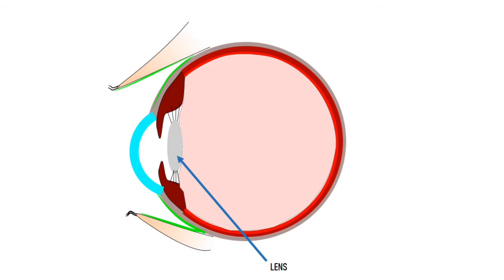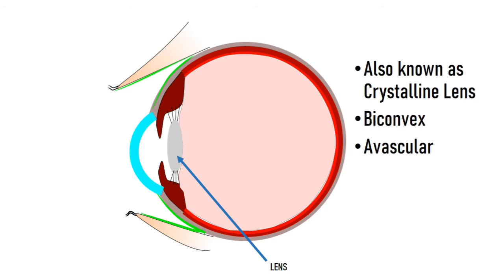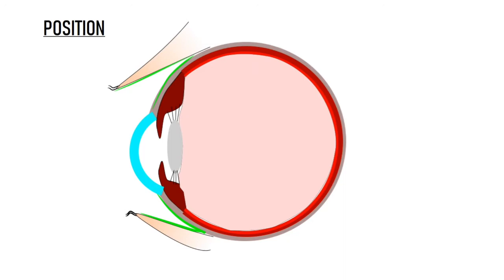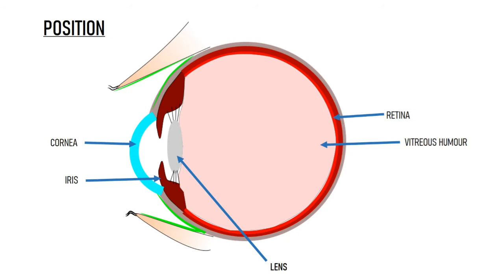The lens is a biconvex structure. It is avascular and transparent. The lens is positioned in the anterior segment of the eye, just behind the iris, and anterior to the iris lies the cornea. Behind the lens is the vitreous humor, and the lens is suspended in its place by the zonules, also known as suspensory ligaments.